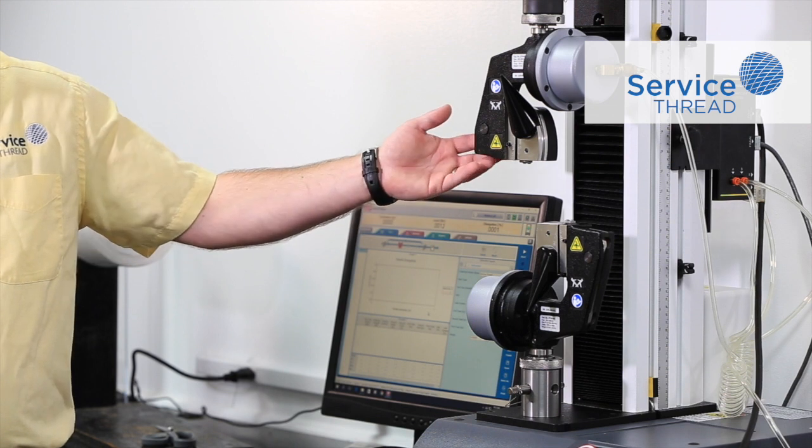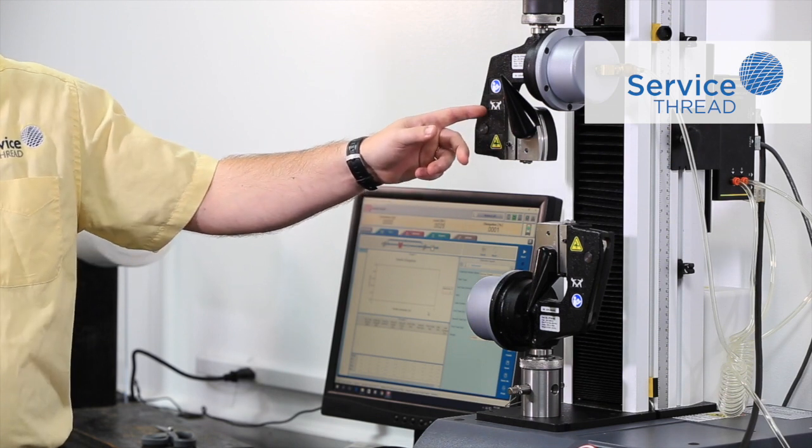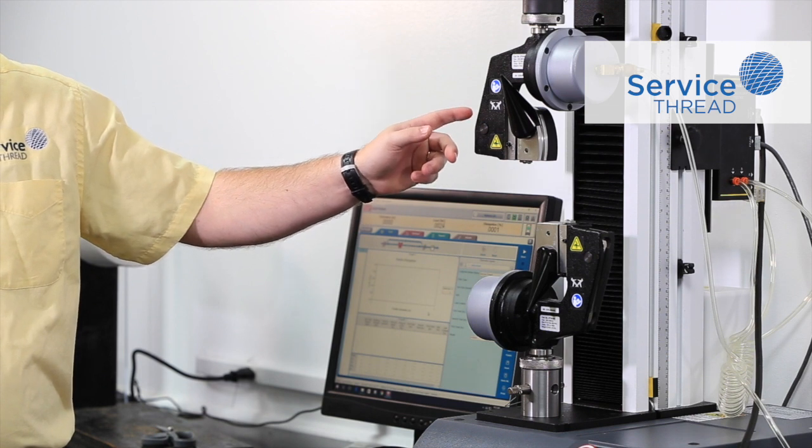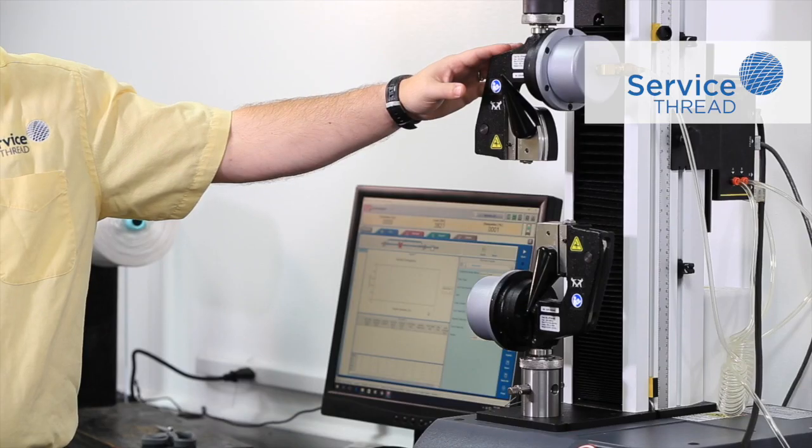For this particular test, we're using the INSTRON 3345 constant rate of extension tensile tester. The grips that we're using are pneumatic yarn grips that are rounded at the top to prevent jaw breaks during the test process. The grips themselves are rated at 450 pounds, so we can do anywhere from a small polyester fiber to a heavy aramid fiber.